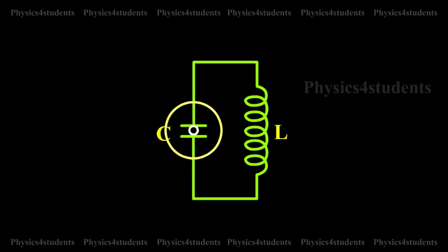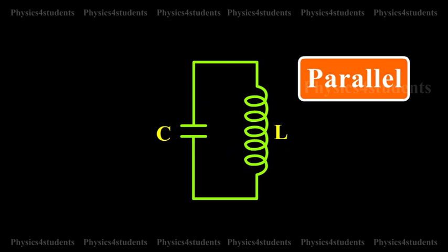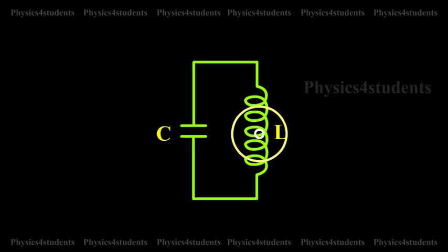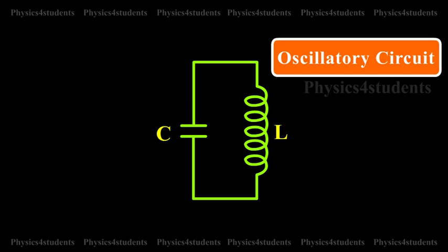If a capacitor of capacitance C and an inductor of inductance L are connected in parallel, then such a circuit represents an oscillatory circuit.